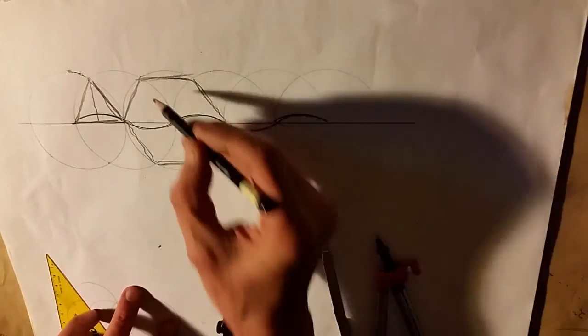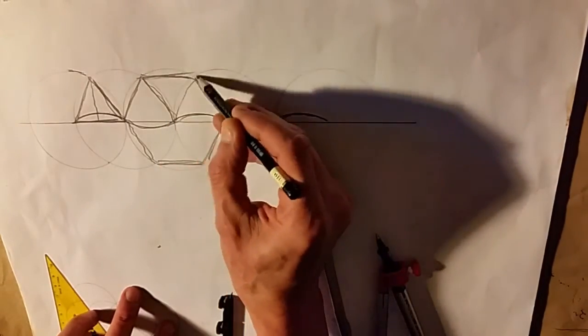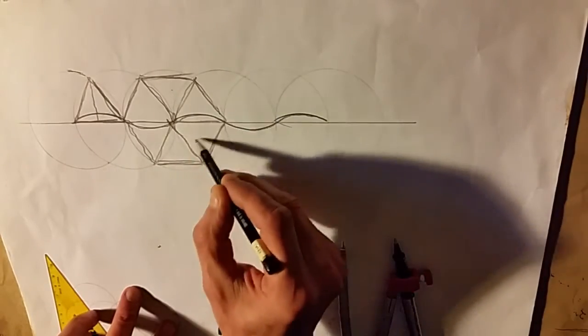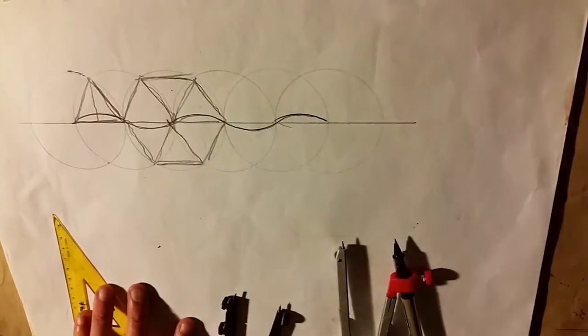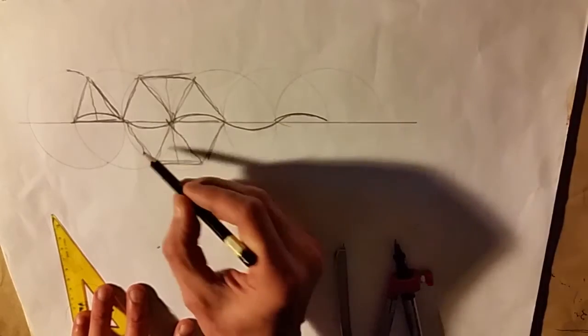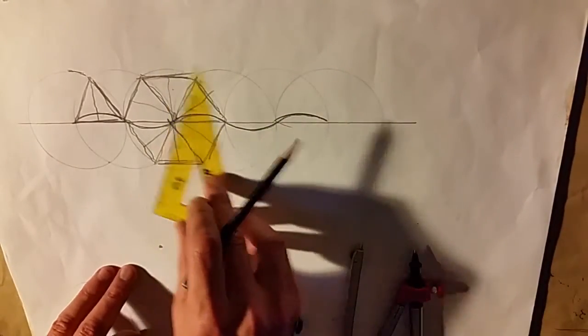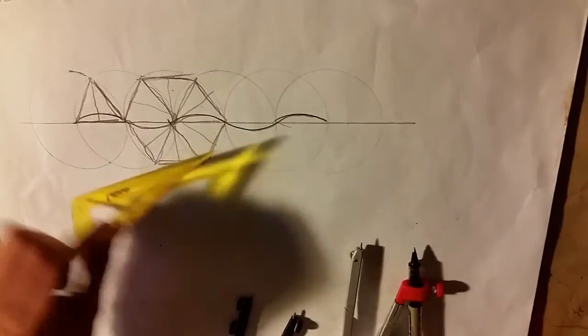We can also see that the hexagon is made of six smaller equilateral triangles: one, two, three, four, five, six. And if you have those in half, you would have 12 of these triangles wheeling around.